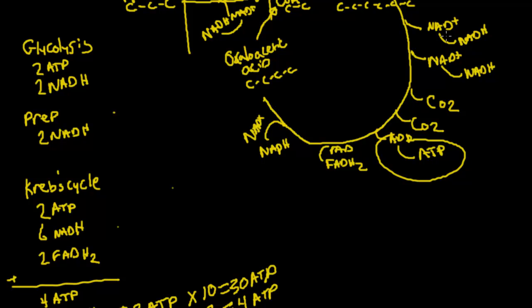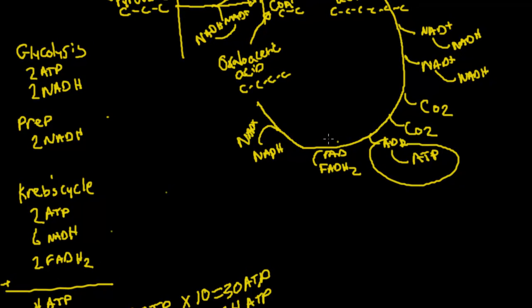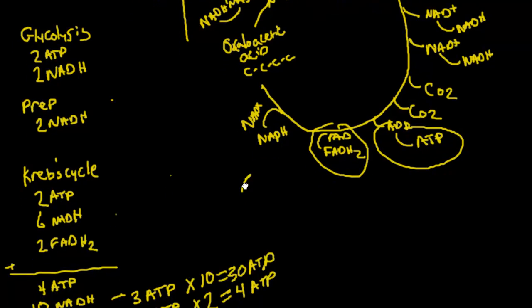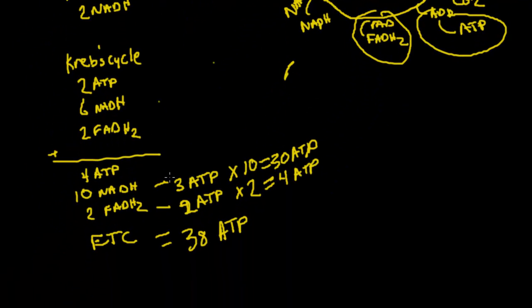Then we have 6 NADHs. So we've got 1, 2, 3. Again, it happens twice because of the 2 pyruvates. So that gives us 6 NADHs. And then we had 2 FADHs. And so that's where these come from. So we've got the 4 ATP that includes the 2 from Krebs cycle and 2 from glycolysis.